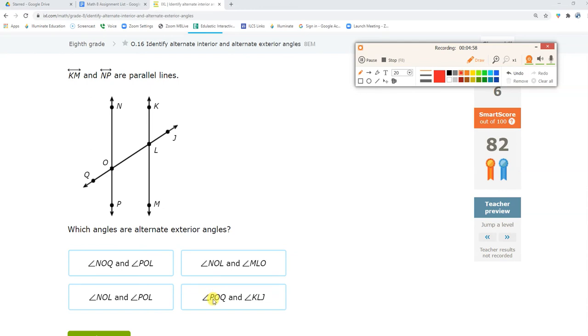Angle NOQ, angle POQ. I'm going to check it. POQ, NOQ. And his alternate exterior would be angle JLM. Nope.